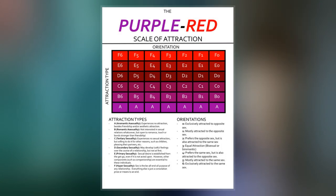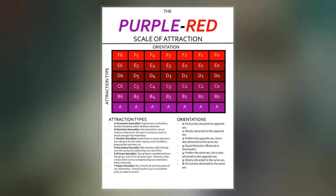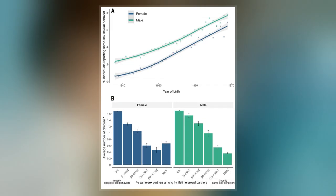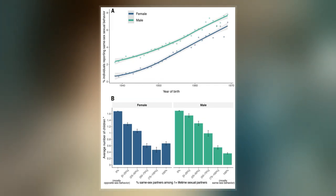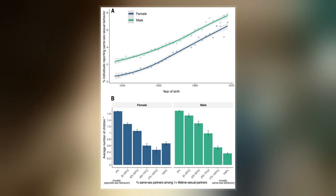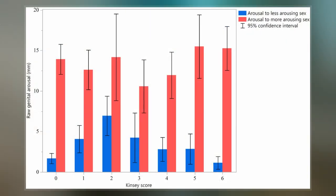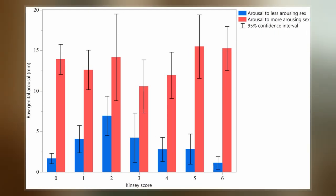In both the male and female volumes of the Kinsey reports, an additional grade, listed as X, indicated no sociosexual contacts or reactions. The reports were first published in Sexual Behavior in the Human Male by Alfred Kinsey, Wardell Pomeroy, and others, and were also prominent in the complementary work Sexual Behavior in the Human Female.